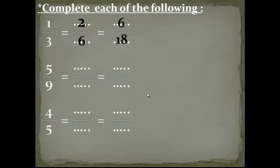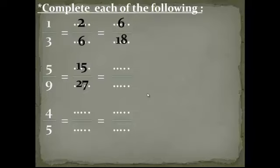5 over 9 — again we multiply by any number. I will choose multiply by 3: 5 by 3 equals 15. We multiply by 3 up, so we multiply by 3 down: 9 by 3 equals 27. I will also choose multiply by 4: 5 by 4 equals 20, 9 by 4 equals 36.